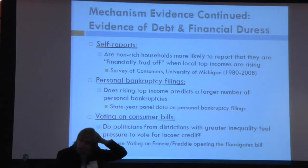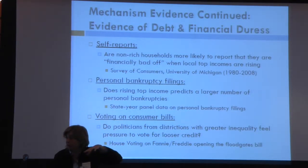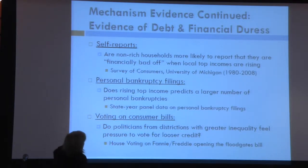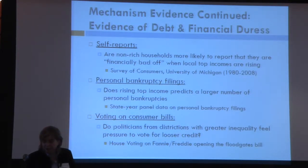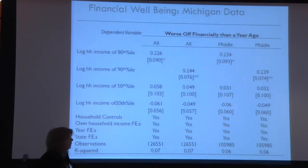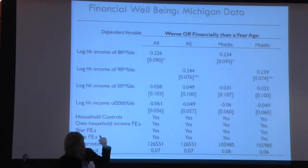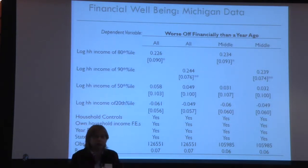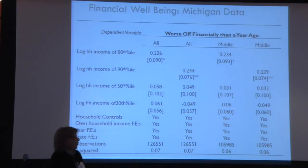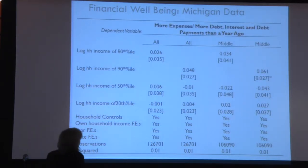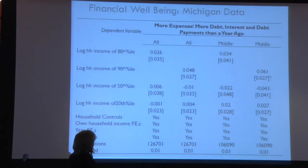We look at three things. First, self-reported financial wellbeing from the Survey of Consumers: are you worse off financially? We relate that to income of the rich. Second, bankruptcy filings in state-years related to income of the rich. Third, voting on consumer finance bills. We find that people in areas with higher rich income will say they're worse off financially than a year ago, and will say they have more expenses and more debt than a year ago — controlling for state and year fixed effects and own income.